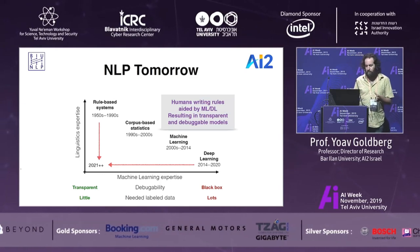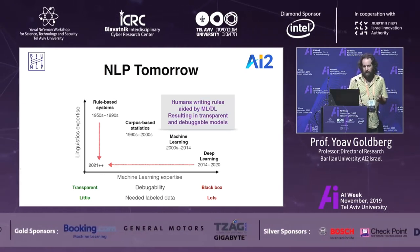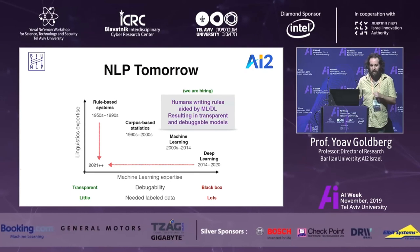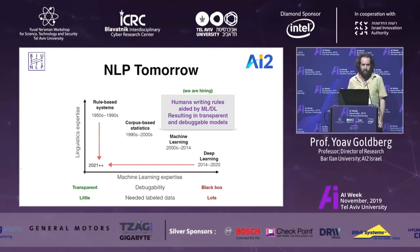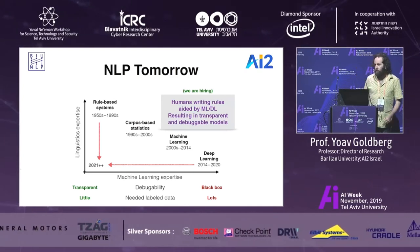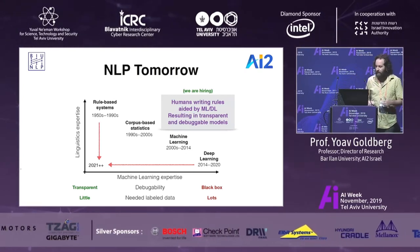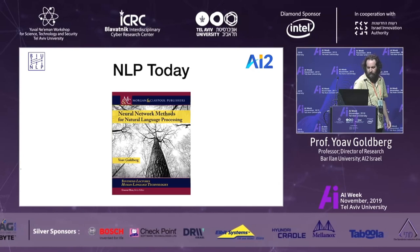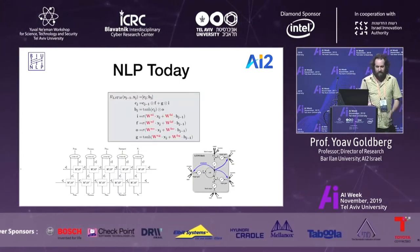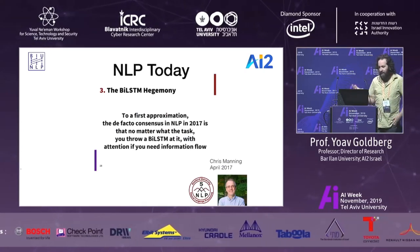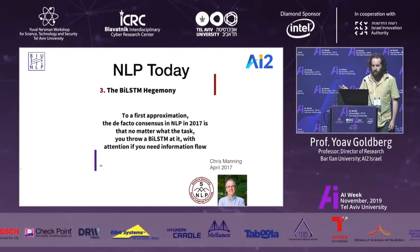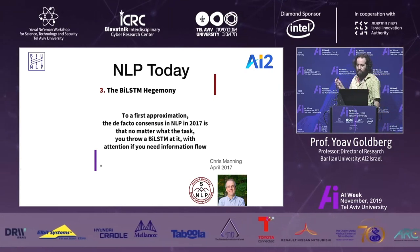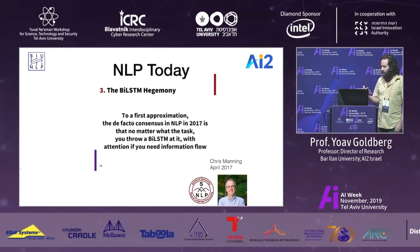I think one way to achieve this is to combine both rule-based and deep learning systems — a human writing rules or giving declarative knowledge, aided by machine learning. Basically, a split of human and machine interaction. In the rest of this talk I'll briefly describe how this can look like. But let's talk about NLP today — we are doing deep learning or neural networks. That's an LSTM cell. As Chris Manning said a couple of years ago, basically in NLP you throw some BiLSTM at the task with some attention and it works very well.